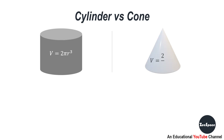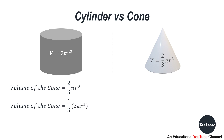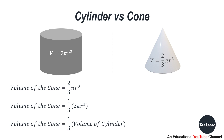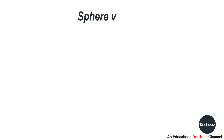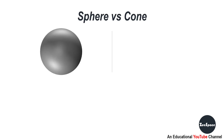Cylinder versus cone: volume of cylinder equals 2 pi r cubed and volume of cone equals 2/3 pi r cubed. We can write the volume of cone as 1/3 times 2 pi r cubed. Hence, volume of cone equals 1/3 times volume of cylinder. The volume of the cone is one-third the volume of the cylinder.